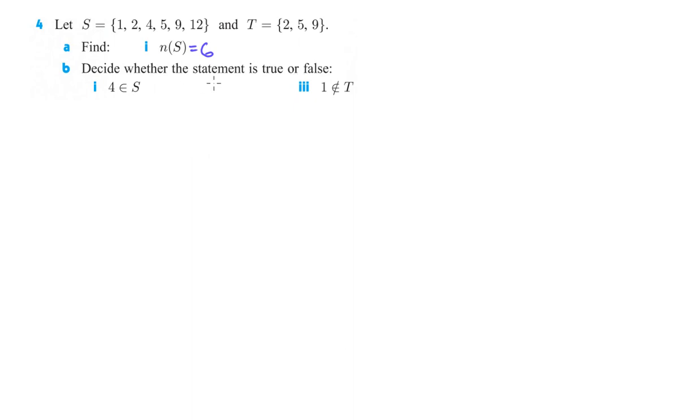B, decide whether the statement is true or false. 4 is an element of set S. So there's 4 in set S, so that would be true. 1 is not an element of T, so there's T. 1 is not in there, so that is also true.